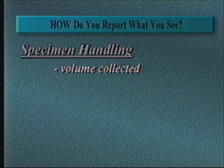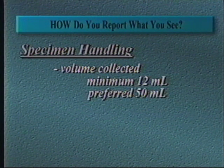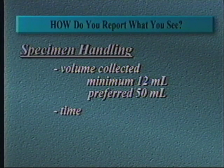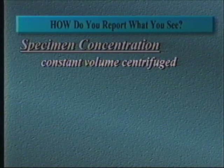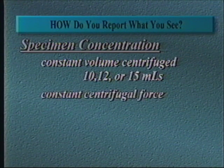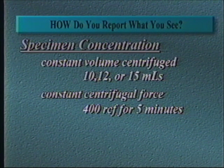In the how section, we're going to address a way to standardize the reporting of various elements. There are many variables due to the constantly changing characteristics of urine based on the patient's hydration status and time of day. The first variable is the volume of urine collected — the minimum recommended volume for adequate analysis is 12 mLs; the preferred volume is 50 mLs. A urine microscopic exam should be performed within two hours of sample collection unless the sample is refrigerated or otherwise preserved. Standardization of the centrifugation technique is important: a constant amount of urine should be centrifuged — the recommendation is 10, 12, or 15 mLs — at a relative centrifugal force of 400 for 5 minutes.